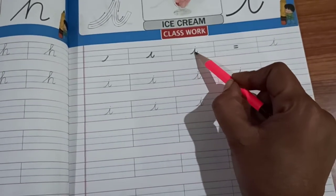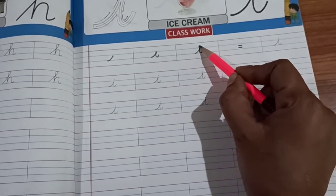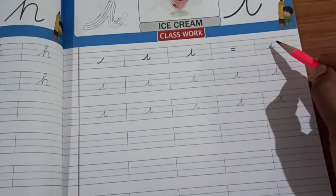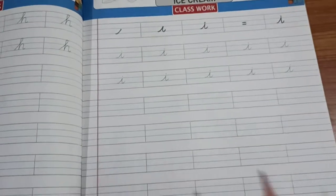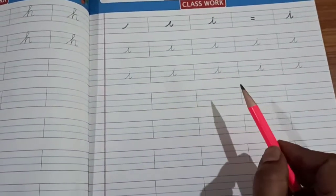Here we have to place the dot. This is how we will write letter I. Complete this dotted line children.